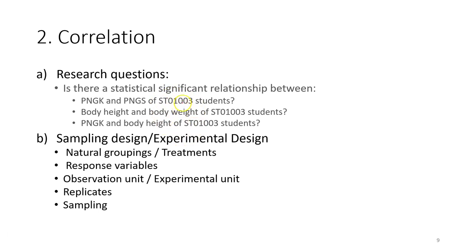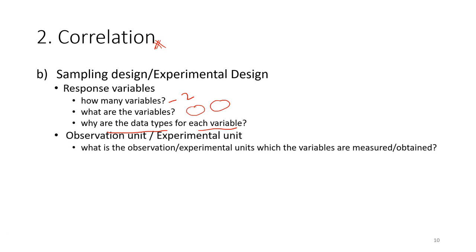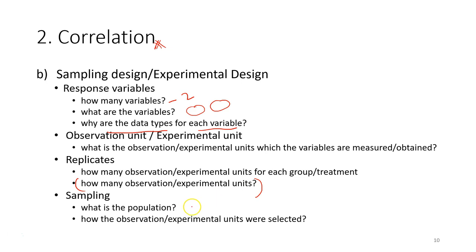After we have the research questions, we can start to think about our sampling design or experiment design. For regression and correlation analysis, you don't have grouping or treatment because we are not asking about differences between two populations. For the response variable, we have two variables — for example, body height and body weight — and the data type is scale data. We also need to determine the observation unit and how many observations to include.